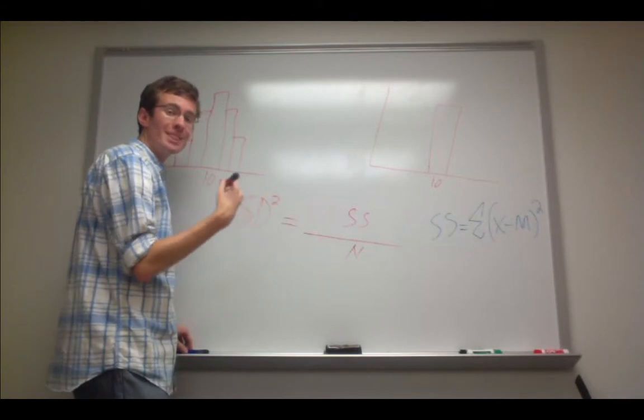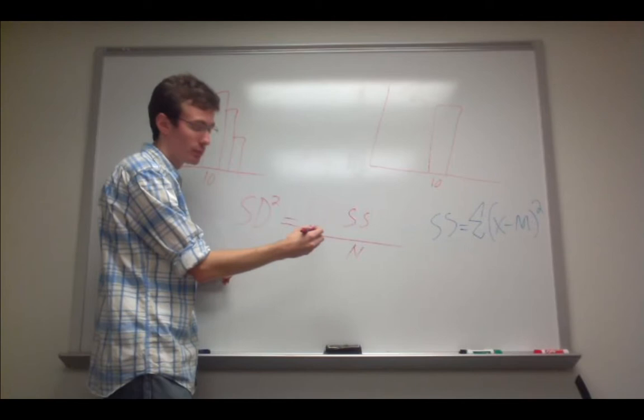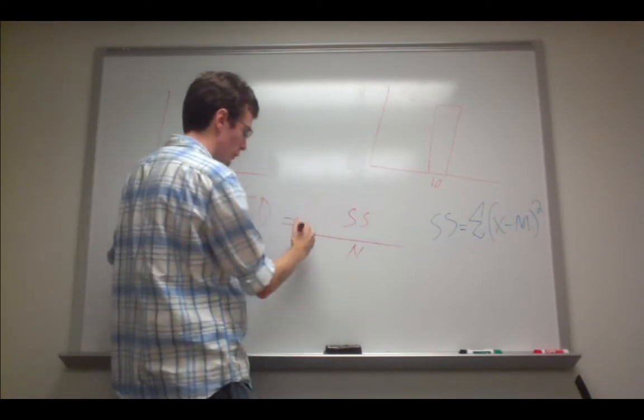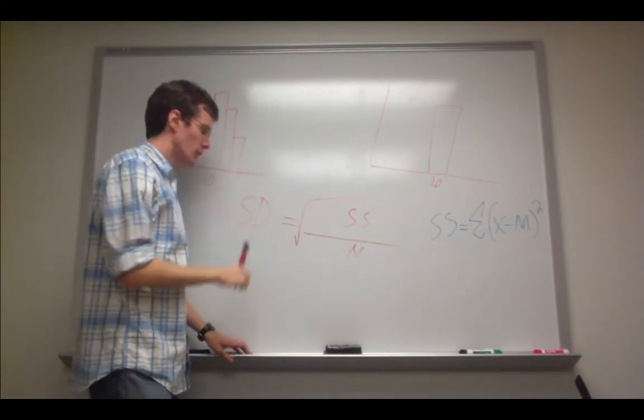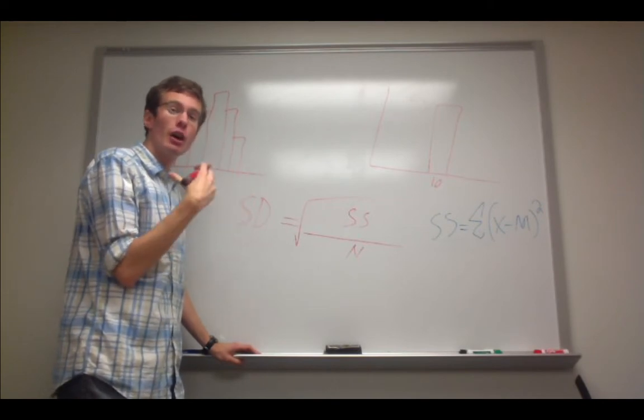Now finally, to compute the standard deviation, we simply take the square root of both sides. We do that for this side, it eliminates the exponent. We do it for this side, and we take the square root of this entire term here. Standard deviation is one of the primary measures of variability.